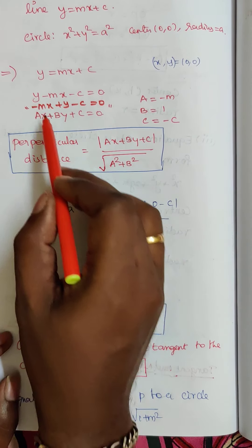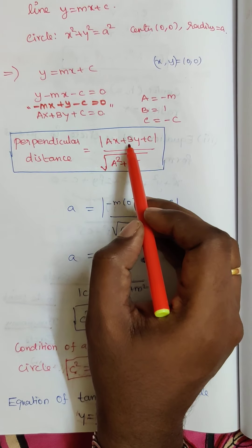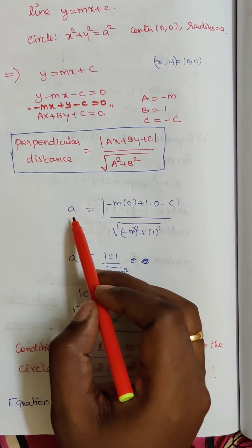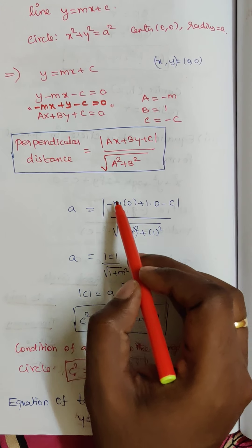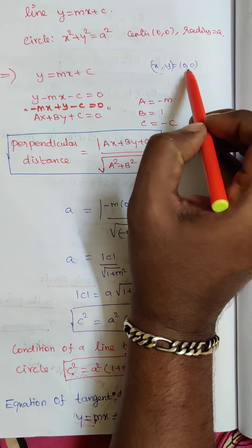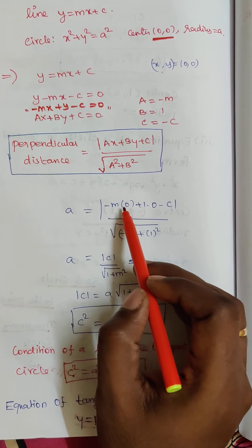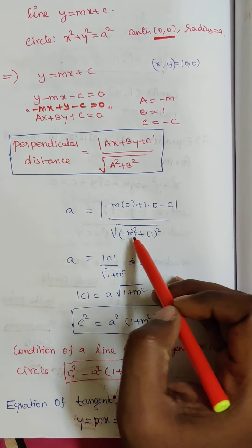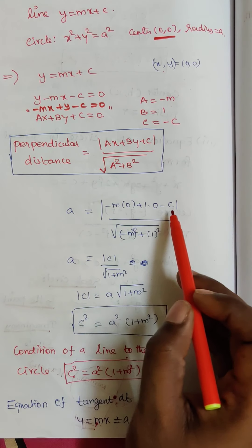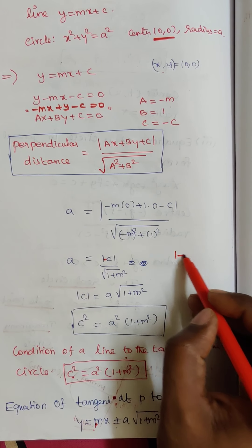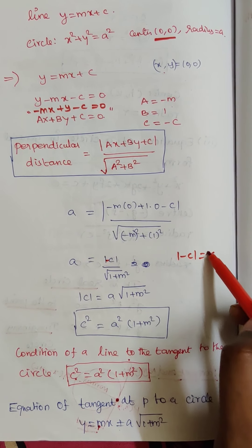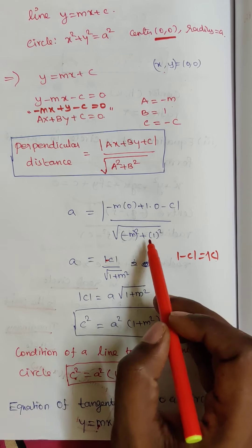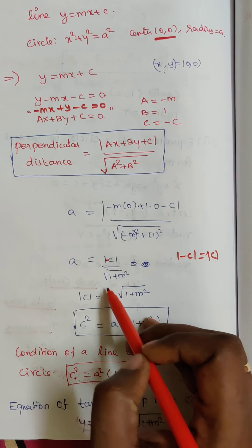The perpendicular distance from the center (0, 0) to the line equals the radius a. Applying the distance formula: a equals modulus of (−m·0 + 1·0 − c) divided by square root of m squared plus 1. This simplifies to a equals modulus of c divided by square root of 1 plus m squared, so modulus c equals a times square root of 1 plus m squared.